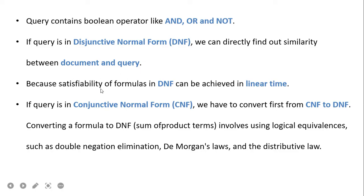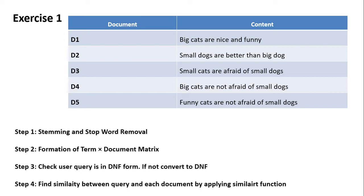If the query is in conjunctive normal form, we first have to convert from CNF to DNF. Converting a formula to DNF, which is the sum-of-products form, involves using logical equivalences such as double negation elimination, De Morgan's law, and the distributive law — that is, we apply Boolean algebra to convert the CNF to DNF form internally. Now let us start with the example.